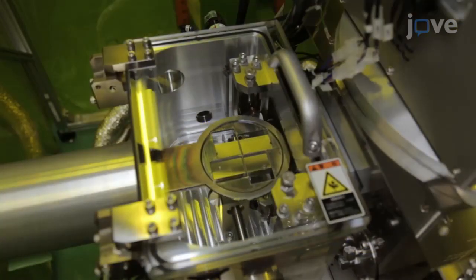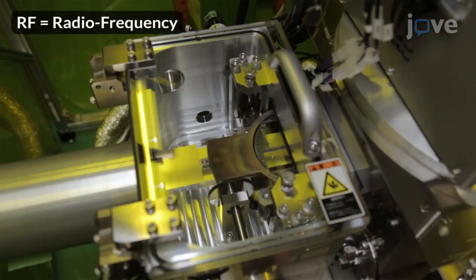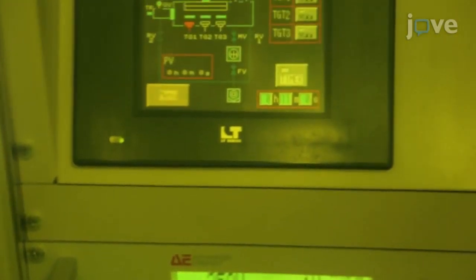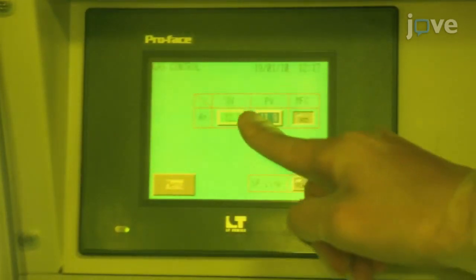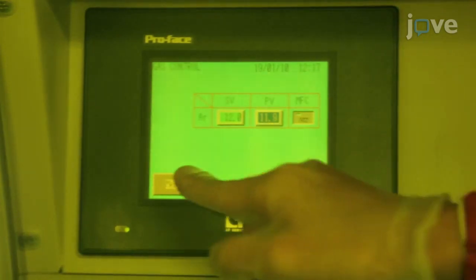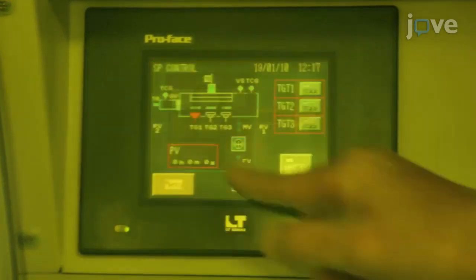Set the glass substrate in the chamber of an RF magnetron sputtering machine. Set the RF power to 250 watts, the sputtering time to 11 minutes, the flow rate of argon gas to 12 SCCM, and the chamber pressure to 0.5 Pa.